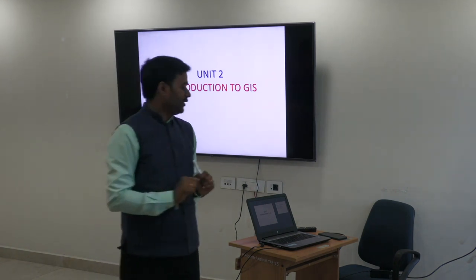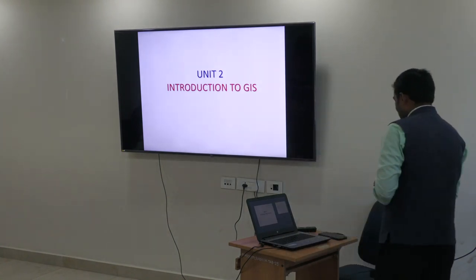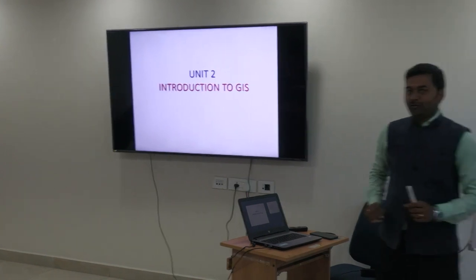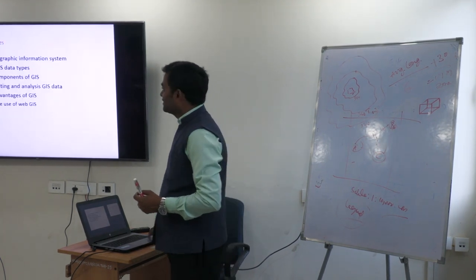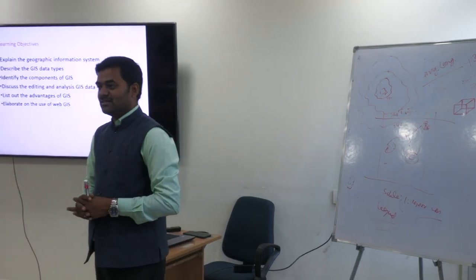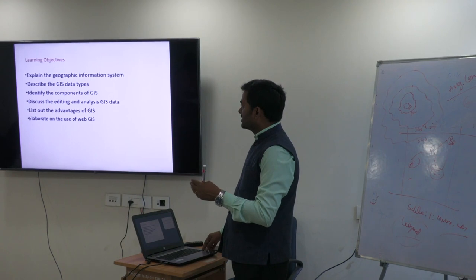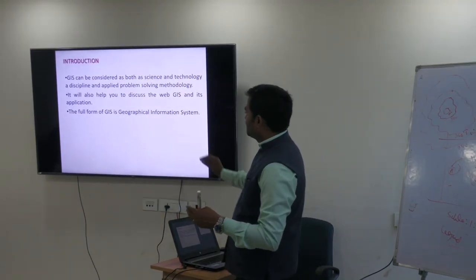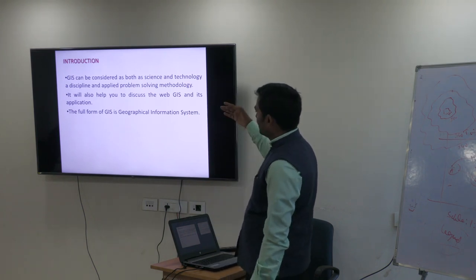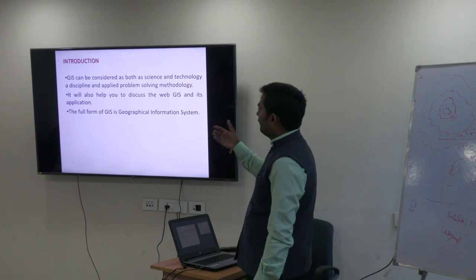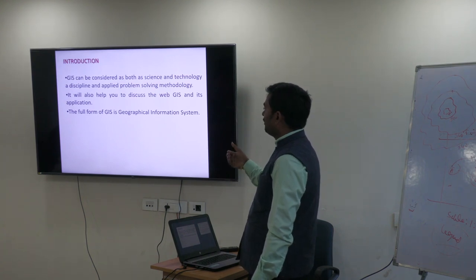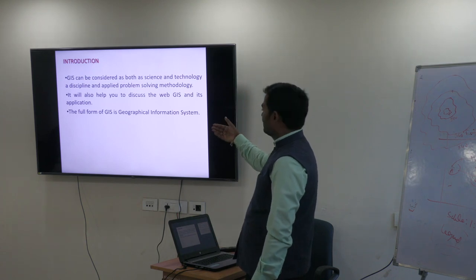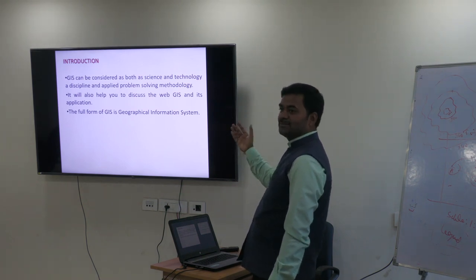Now, coming to the second unit: introduction to GIS. GIS is a Geographical Information System — full form is Geographical Information System or Geographic Information System. There are different names being given for the full form of GIS. These are the learning objectives in our reading materials: what is GIS, types, etc. GIS is both a science and an art, or you can say it's a technology which is a discipline and an applied problem-solving methodology.